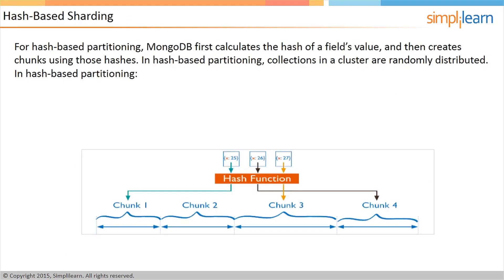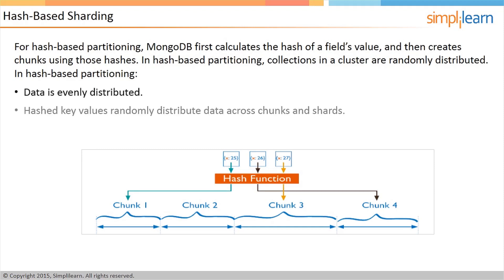For hash-based partitioning, MongoDB first calculates the hash of a field's value, then creates chunks using those hashes. Unlike range-based partitioning, in hash-based partitioning documents with close shard key values may not reside in the same chunk. This ensures that the collection in a cluster is randomly distributed, and data is evenly distributed across chunks and shards. However, the random distribution makes range queries on the shard key ineffective, as data will be distributed to many shards rather than a few, as in the case of range-based partitioning.